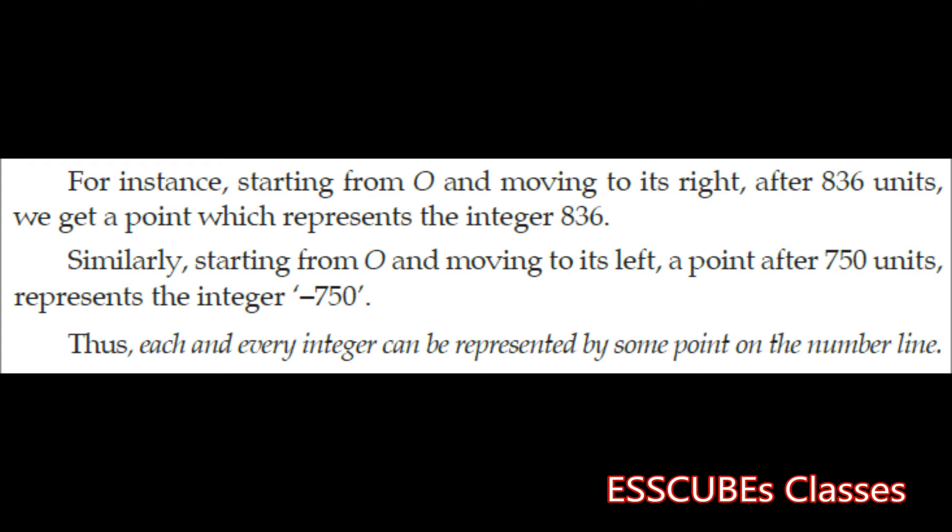For instance, starting from O and moving to its right after 836 units, we get a point which represents the integer 836. Similarly, starting from O and moving to its left, a point after 750 units represents the integer minus 750. Thus, each and every integer can be represented by some point on the number line.